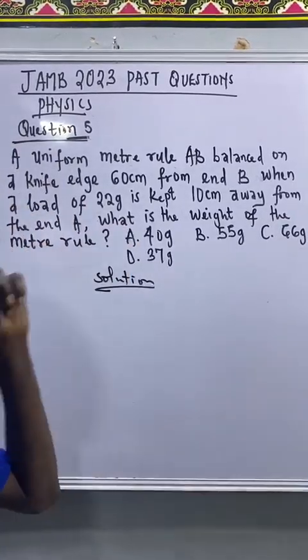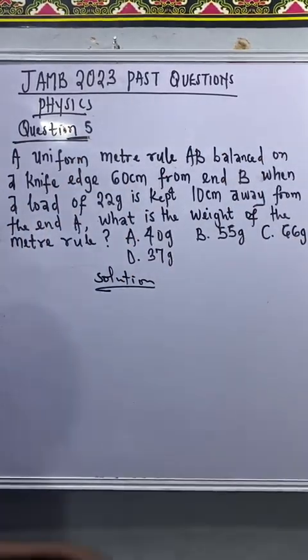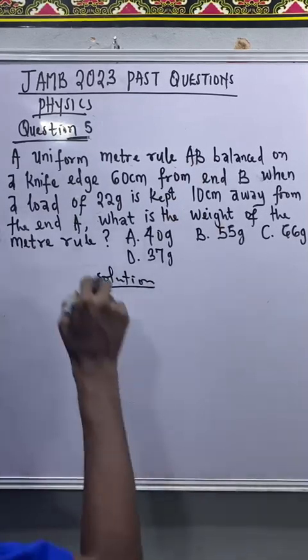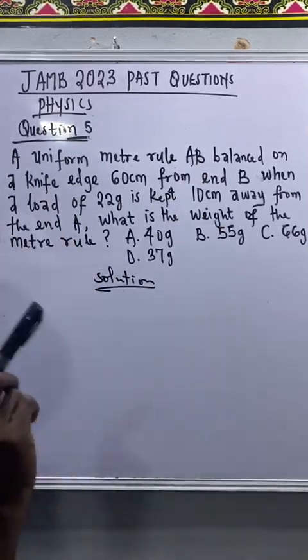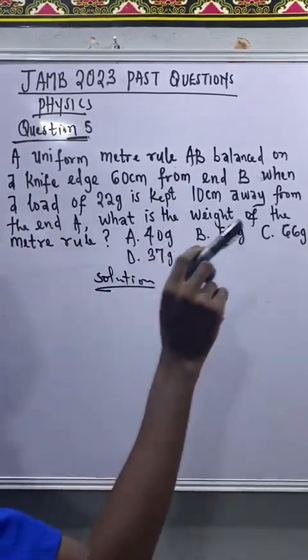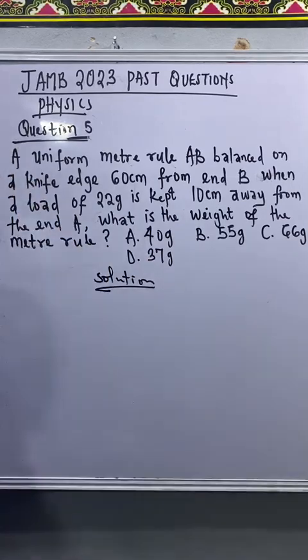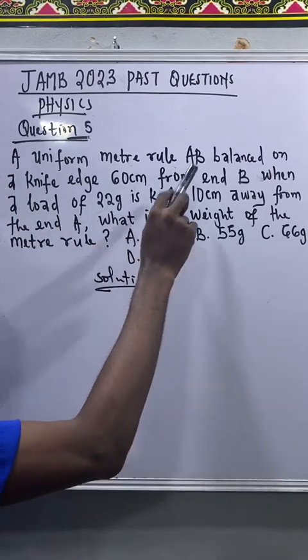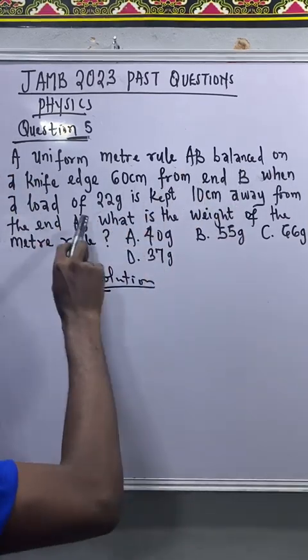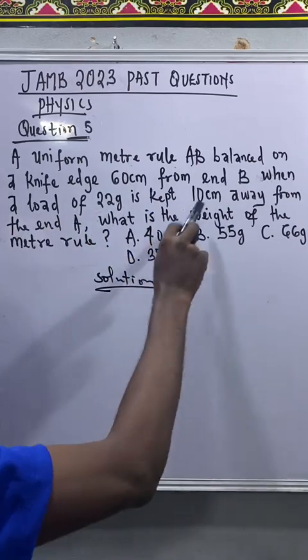Now let's see question 5, JAMB 2023 past question physics. The question says a uniform metal rule AB balanced on a knife edge 60 centimeter from end B when a load of 20 gram is kept 10 centimeter away from the end A.